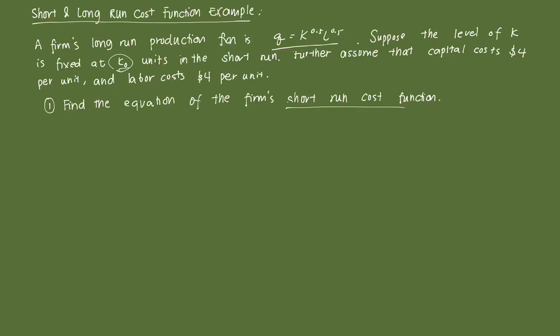Since it's a short-run cost function, we know that since K is equal to K0 in the short-run, then the short-run production function should be equal to Q = L^0.5 * K0^0.5. Remember, it's not going to be equal to K because K is not variable in this case — it's fixed in the short-run. So we need to modify our production function accordingly.